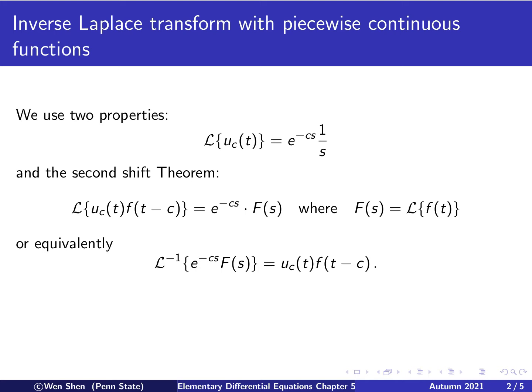We have first the property: the Laplace transform of a unit step function which takes a step at c greater than 0 is e to the negative cs times 1 over s. And then there's the second shift theorem: if you denote the Laplace transform of f of t as capital F of s, then you can construct a shifted function of f, and the Laplace transform of this shifted function equals F of s times e to the negative cs, where c is the amount of shift.